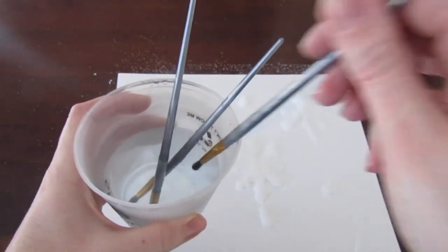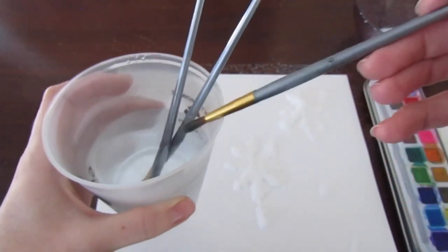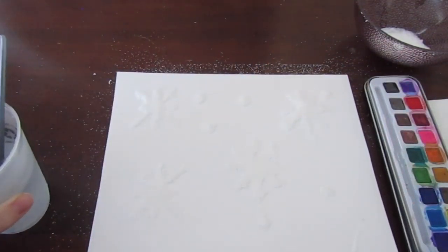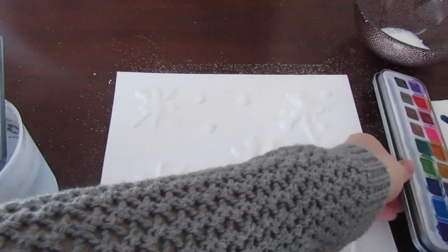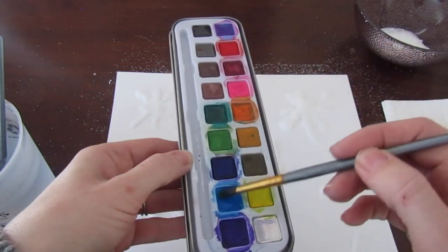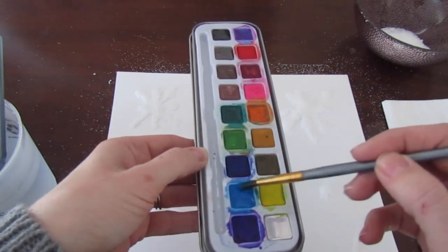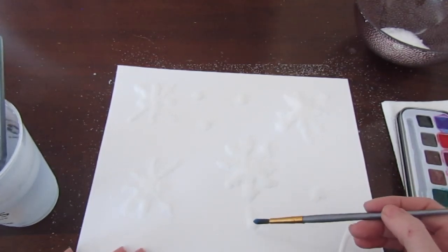So now that you have your excess salt poured off your page, you are going to take a paintbrush that is in water. Because we're using watercolour paint, we need water to make the paint actually show. You don't want to put too much water, so just make sure you give it a good shake. Because if you put too much water, then it will take off some of the salt.